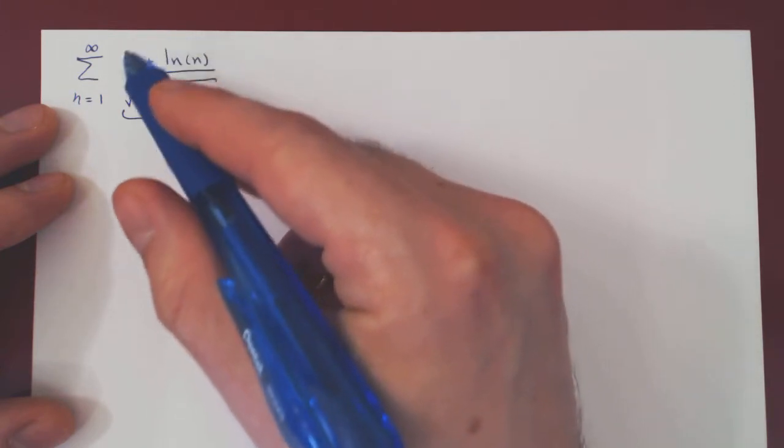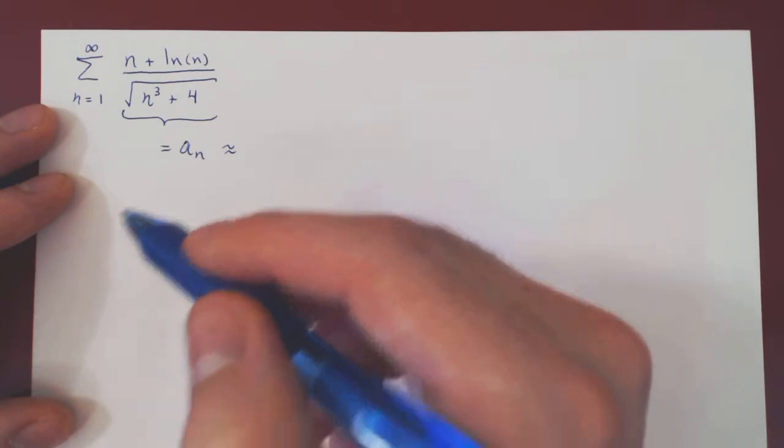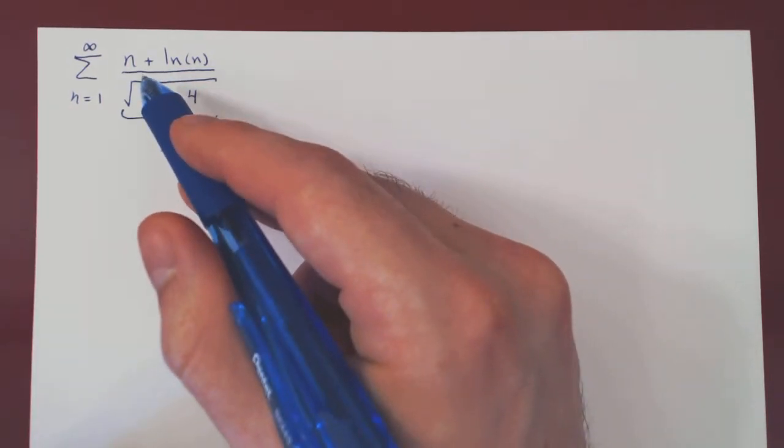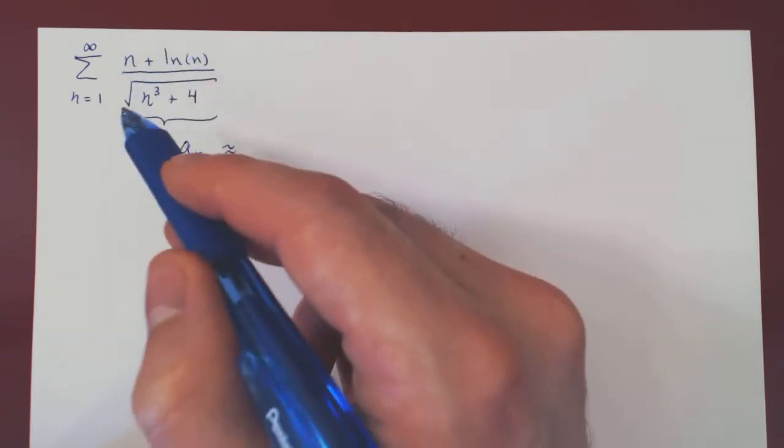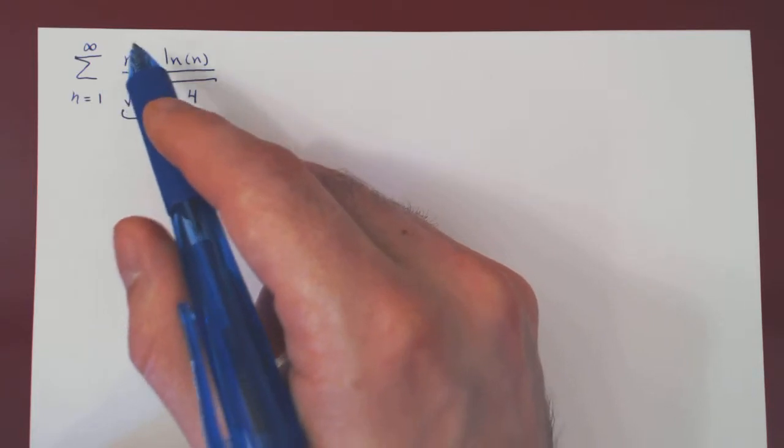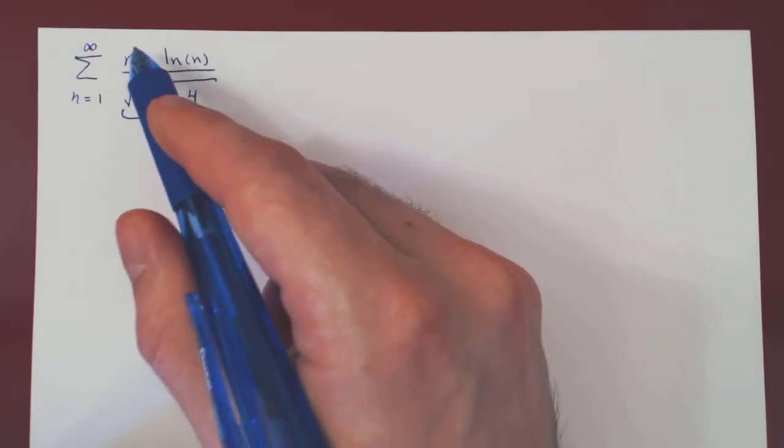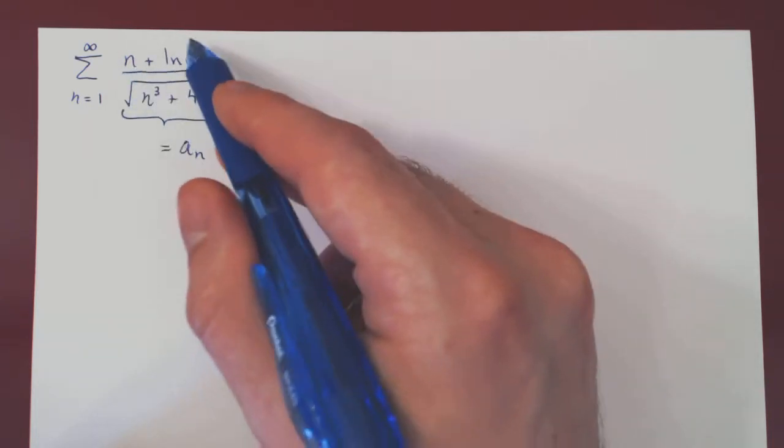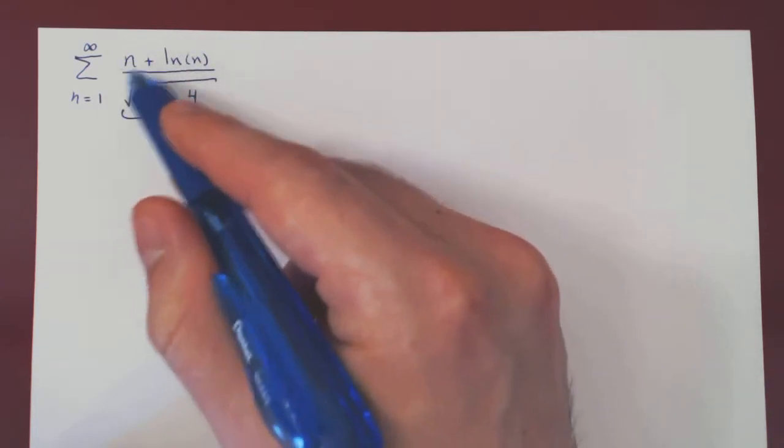we simply have to ask roughly how large is an when n is very large. So, we have on top two terms that blow up to infinity when n goes to infinity, n and ln of n. But we have a power function versus a logarithmic function. We know that power functions are way bigger than logarithmic functions. So, our dominant term on the numerator is n.